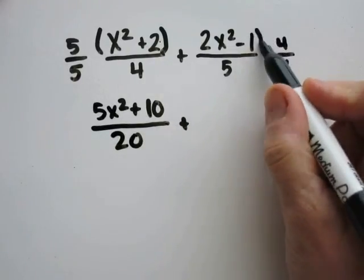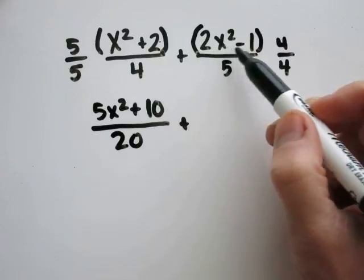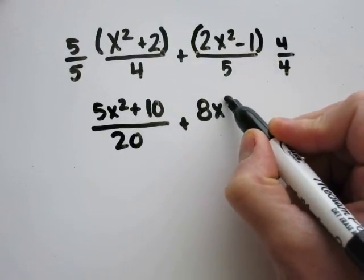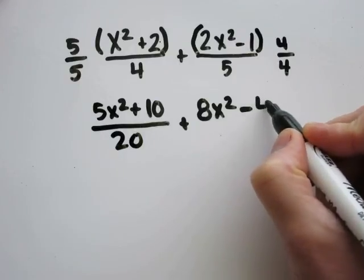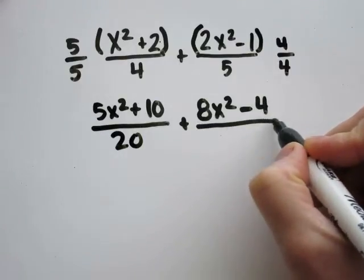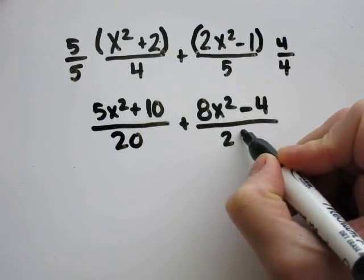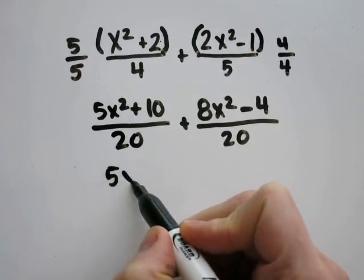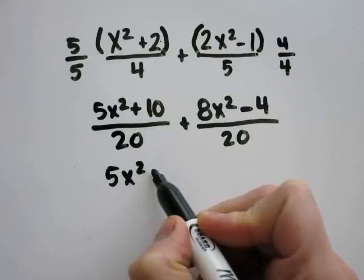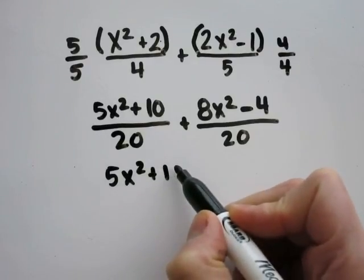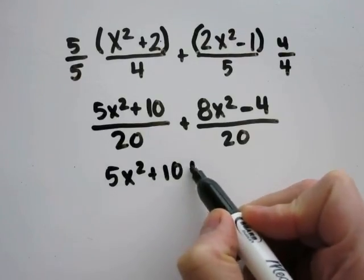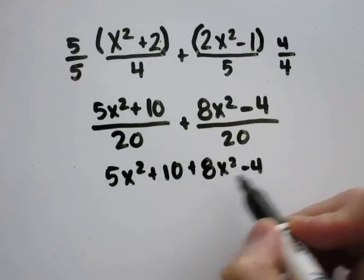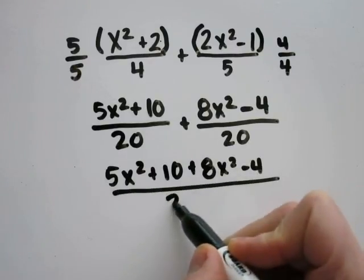5 times 4 is 20. Over here, 2 times 4 is 8 — keep the x squared — and 1 times 4 is 4, with 5 times 4 being 20. The problem can be rewritten by combining the entire numerator: 5x squared plus 10 plus 8x squared minus 4, all over 20.